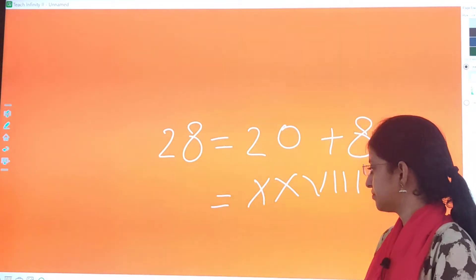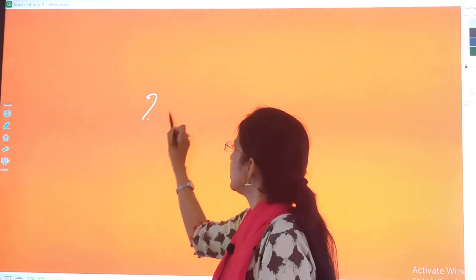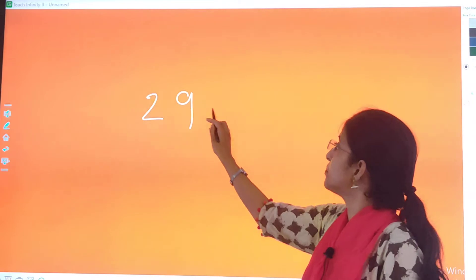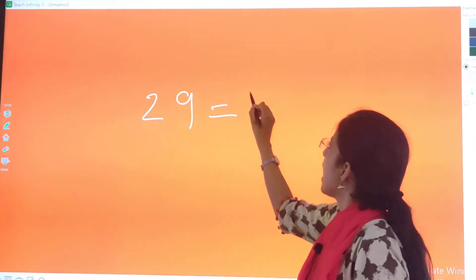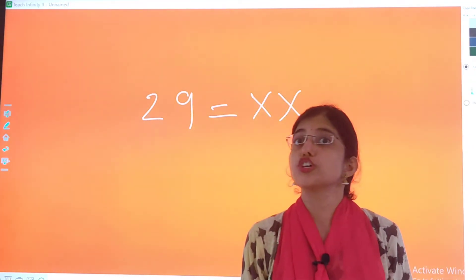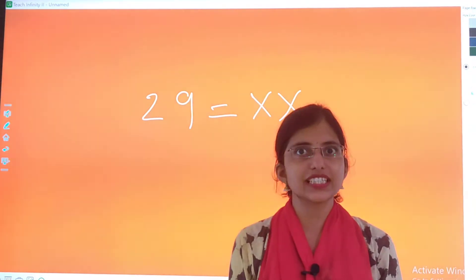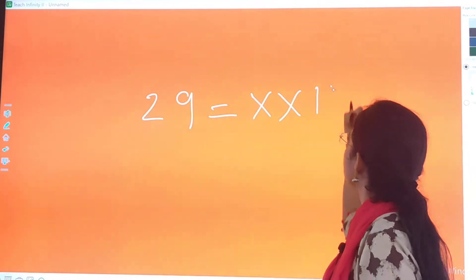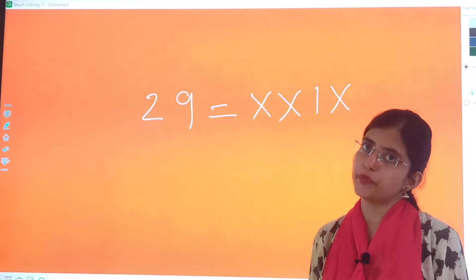Then comes 29. 29 will be represented as X plus X, that is 20. Right? X plus X is 20. Then how do we write 9? We write 9 as IX. So this is how 29 is represented.